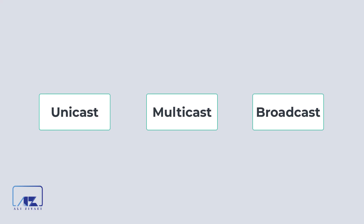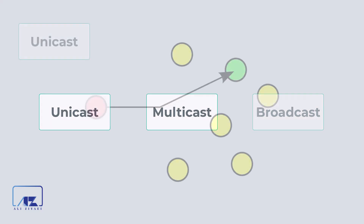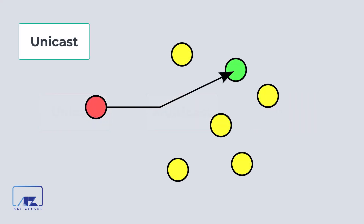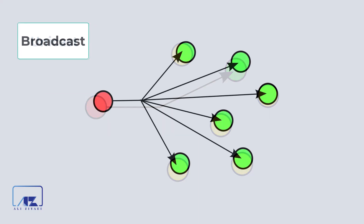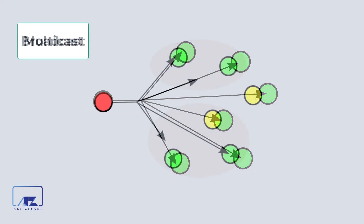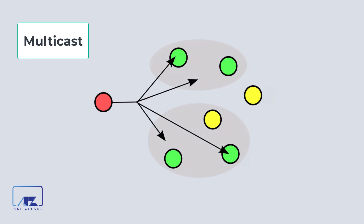Multicast, unicast, broadcast — before we start creating our multicast scope, it is best to understand the differences between these three methods of communication on a network. We have unicast, which means one computer talks with another computer directly. Or one computer can send data to all clients on the network using broadcast. And lastly, clients can use multicast to send data to a group of computers.